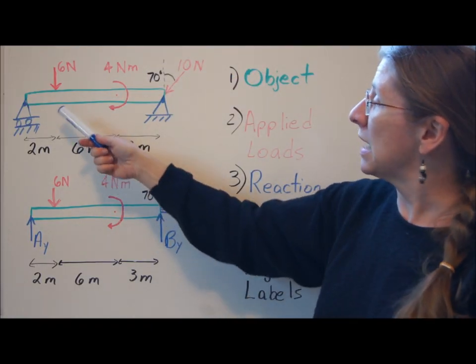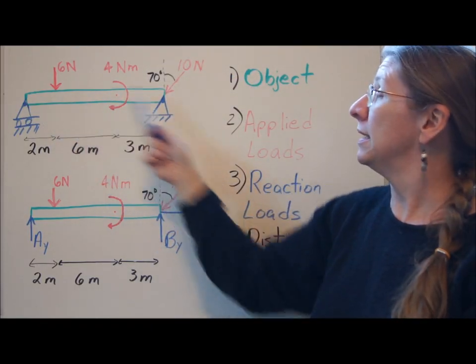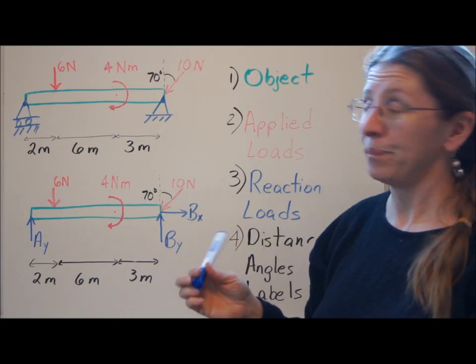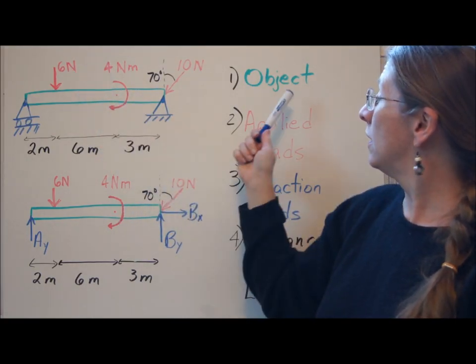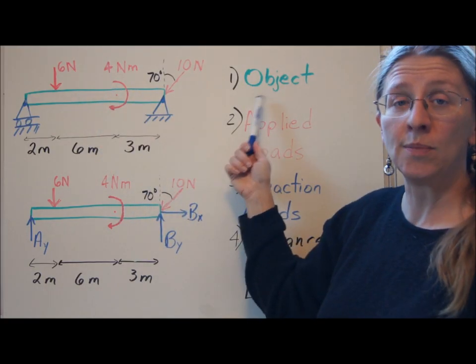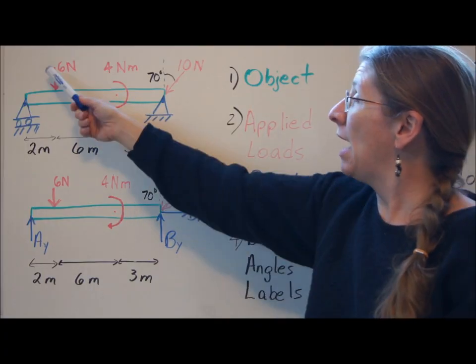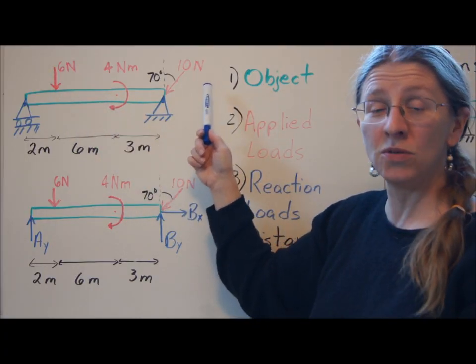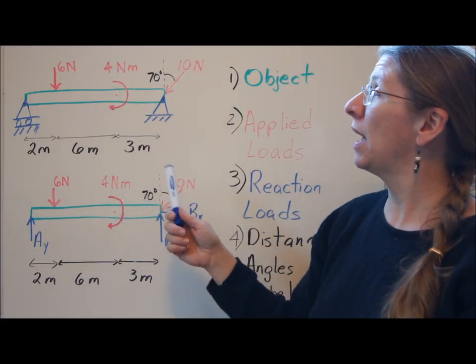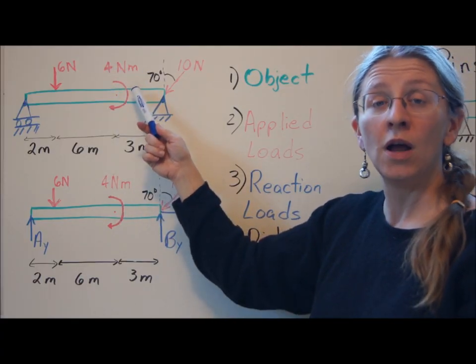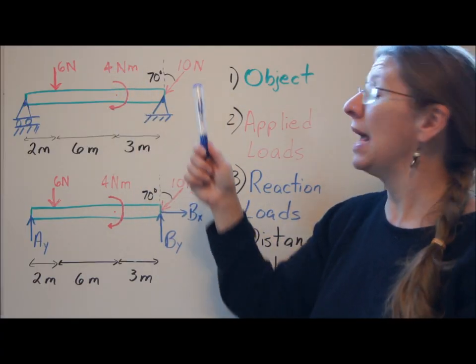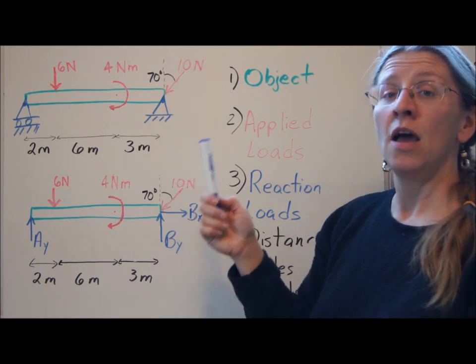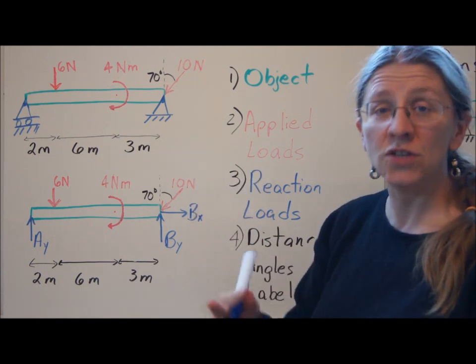So let's look at this particular example. My object is this rod. It's a beam. I have picked my object. My object is the beam. I have three applied loads here. A 6N applied load, a 4Nm applied moment, and a 10N load at 70 degrees. Those are applied. They're given to you in the problem.